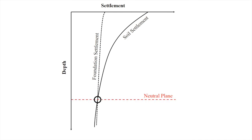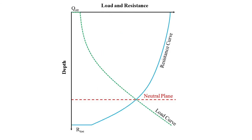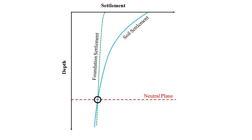This point corresponds with a location where the summation of the structural load and negative skin friction is balanced by the summation of the end-bearing and positive skin friction. The neutral plane location should be located at the same depth regardless of whether the load resistance curves are used or the settlement depth curves are used.